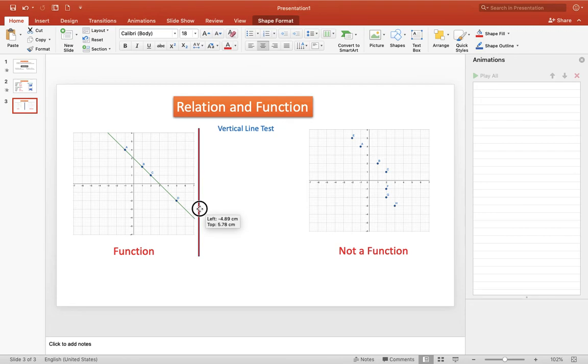Look at this given on my left. This line, I mean the graph, touches our red line, the vertical line test, once. Point D touches this line once, point C, point B, point A. Therefore, this graph is a function.